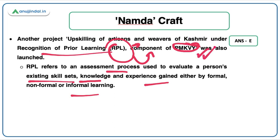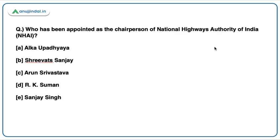We have discussed two major pilot projects launched under this scheme. Can you tell me when this scheme was actually launched by the Government of India? Mention it in the comments. Moving on: who has been appointed as chairperson of the National Highways Authority of India? The right answer is option A — Alka Upadhyay.